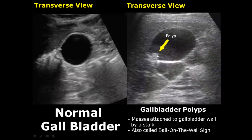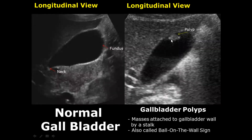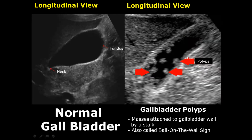Polyps are masses attached to the gallbladder wall by a stalk. Here you can see the mass is attached to the wall — this is also known as the ball-on-the-wall sign. Here you can see a polyp attached to the wall in the fundal region in this longitudinal view. In this image you can see multiple polyps attached to the wall, and you can also notice one stalk.